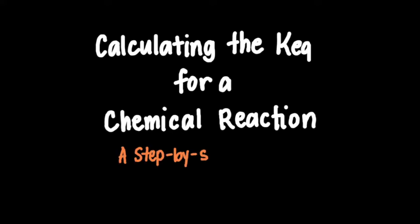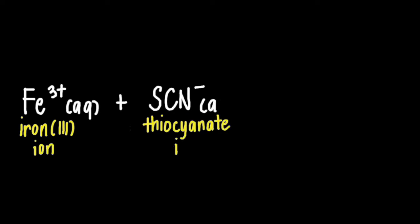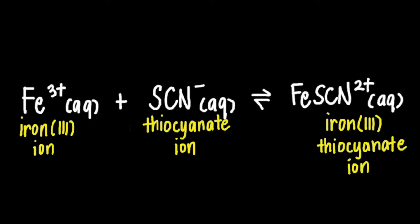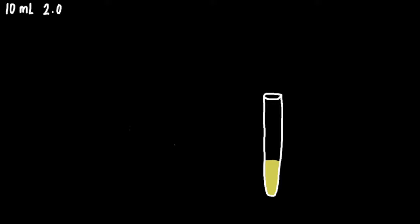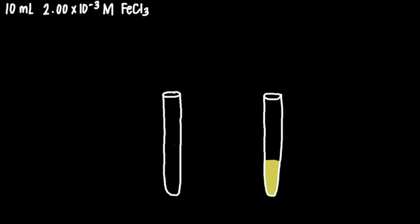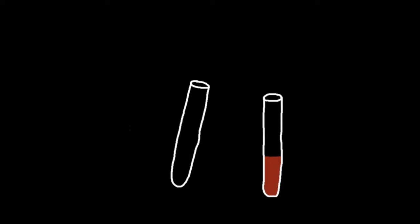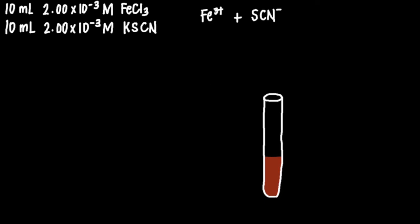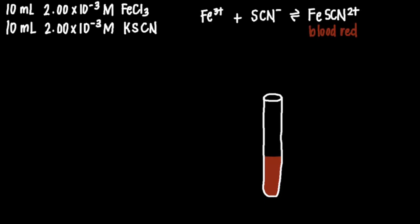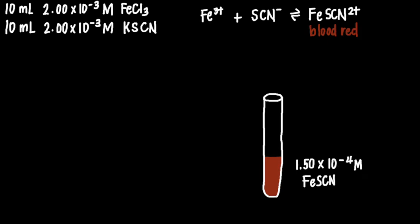In this video, we will go step by step on how to calculate the equilibrium constant for the chemical reaction: iron-3-ion plus thiocyanate ion forming iron-3-thiocyanate ion. We prepare a mixture by mixing 10 ml of 2×10⁻³ molar iron-3-chloride with 10 ml of 2×10⁻³ molar potassium thiocyanate. We expect the solution to become blood red due to the formation of iron-3-thiocyanate ion. The concentration of iron-3-thiocyanate ion was found to be 1.5×10⁻⁴ molar at equilibrium.